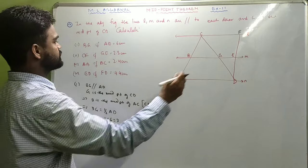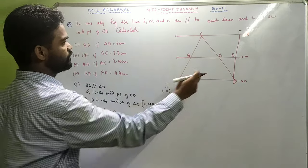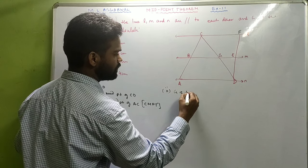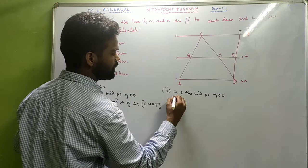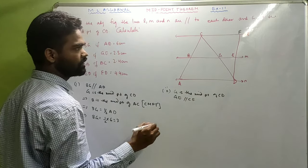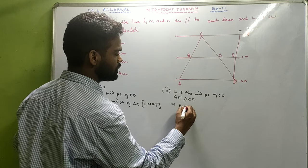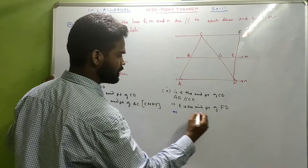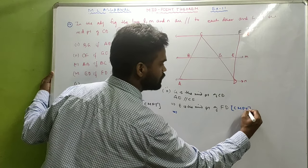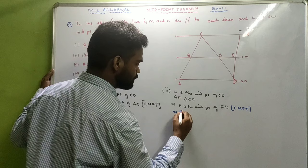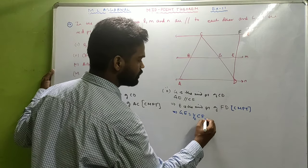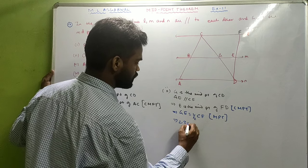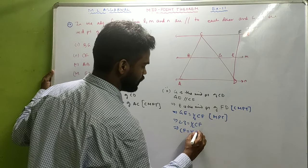Now find CF if GE equals 2.3. G is the midpoint of CD and GE is parallel to CF. By the converse theorem, E is the midpoint of FD. By the midpoint theorem, GE equals half of CF. So 2.3 equals half of CF, meaning CF equals 4.6.